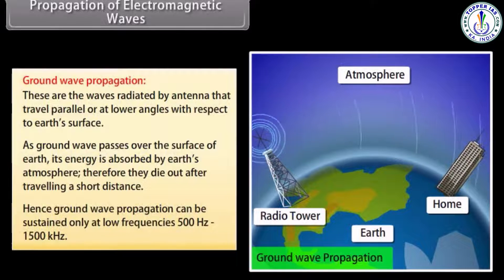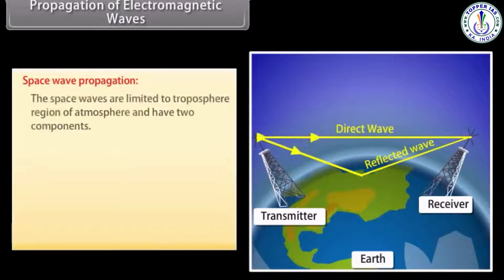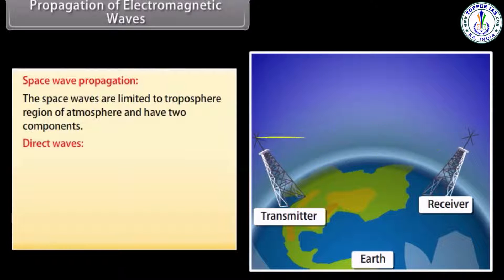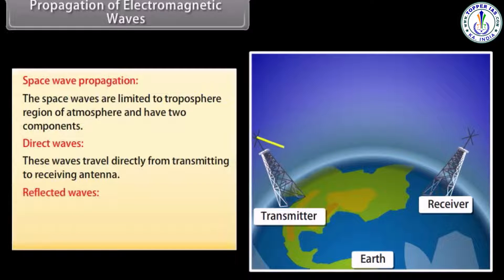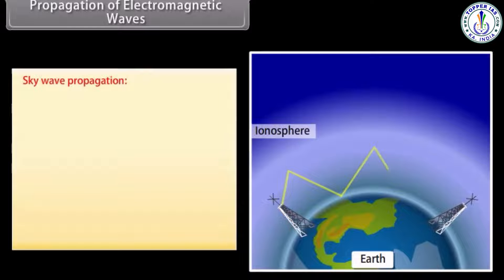Ground wave propagation can be sustained only at low frequencies — 500 Hz to 1500 kHz. Space wave propagation: space waves are limited to the troposphere region of the atmosphere and have two components. Direct waves travel directly from the transmitting to the receiving antenna. Reflected waves travel from the transmitting antenna to the earth and are then reflected to the receiving antenna.